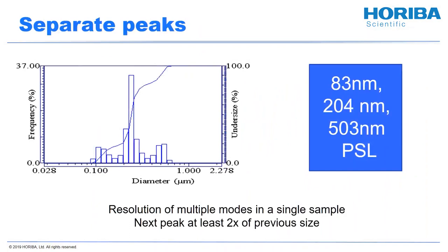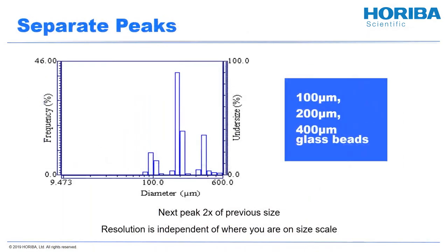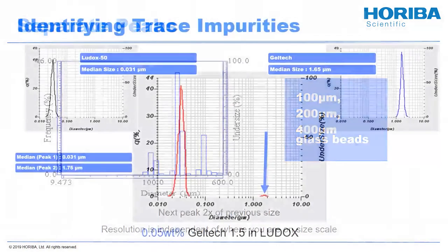If my peaks are more widely separated — for example 80 nanometer, 204 nanometer, and 50 nanometer polystyrene latex — then I can resolve multiple modes in a single sample and see three distinct peaks. These peaks are about a two-to-one ratio in particle size, so they are well separated. The previous example had a difference of about 1.1x, and the wider separation lets you see distinct peaks in laser diffraction. That rule of thumb holds for glass beads at 100, 200, and 400 microns as well. It's really the ratio of peak sizes that gives you an estimate of how well you can separate things.